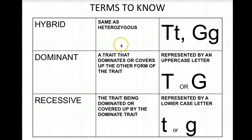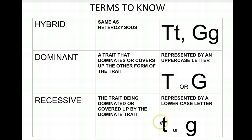Hybrid means the same thing as heterozygous — different. Think of hybrid cars that use two different power sources. Dominant is a trait that takes over or covers up the other form, and it's always represented by the uppercase letter. Recessive is the trait that gets covered up by the dominant trait, represented by lowercase letters. Remember, for short plants we use lowercase t, not s — we always use the first letter of the dominant trait.